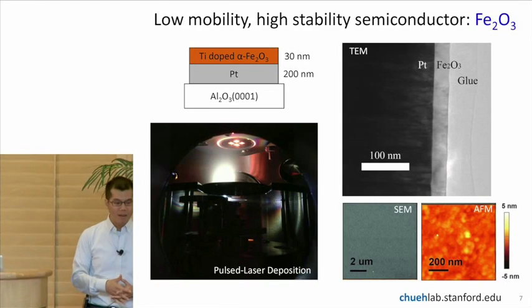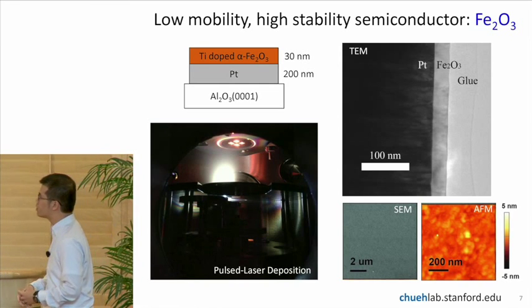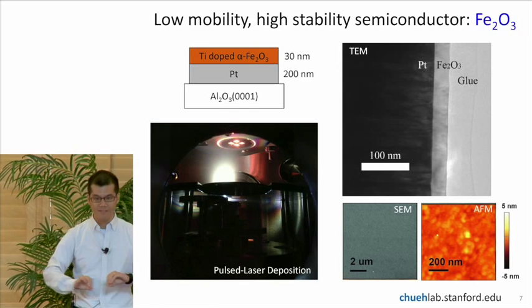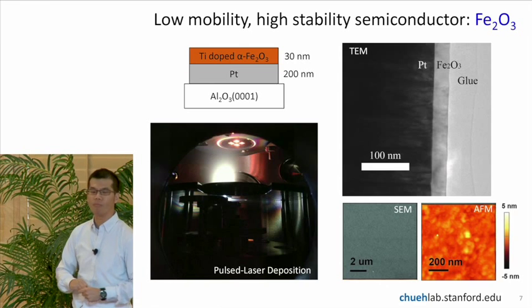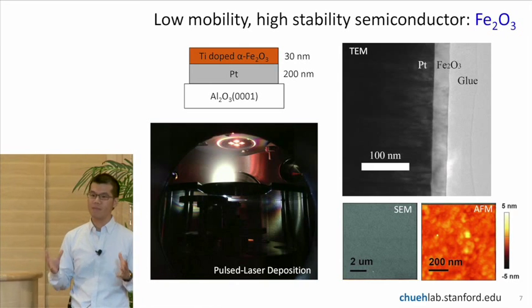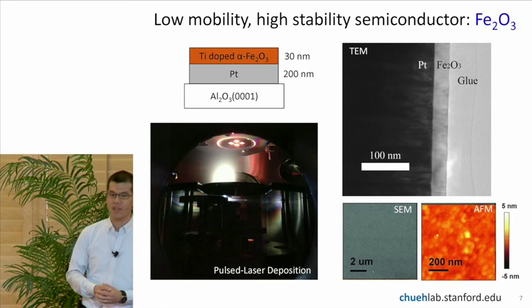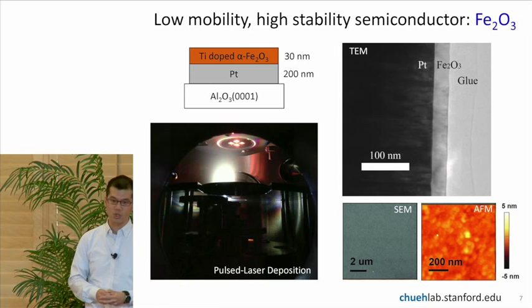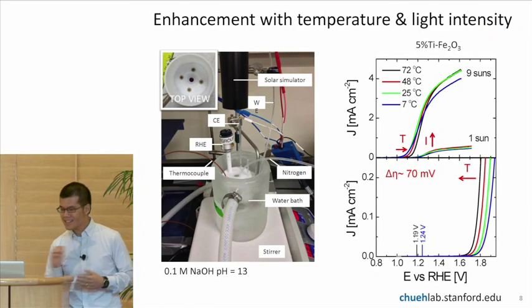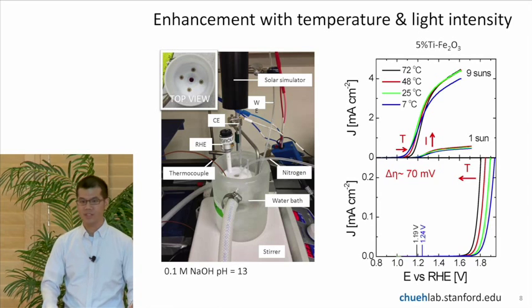So we first examined this iron oxide as a thin film geometry. In my group, we do a lot of fundamental research with model systems. So we use pulse laser deposition to make a very thin 30 nanometer film of iron oxide on a platinized sapphire substrate. And you can see we were able to make very, very high quality structure. This is a little bit in contrast with the nanostructure that you see with PECs, but this allows us to control the morphology perfectly.